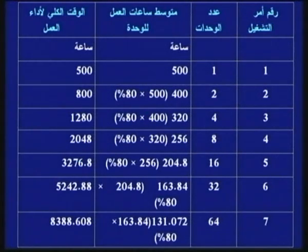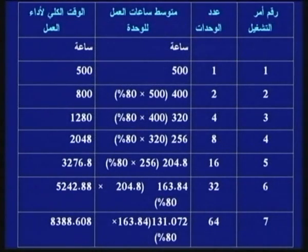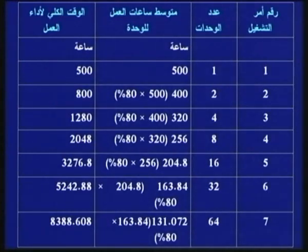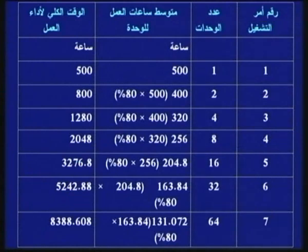أمر التشغيل 3: نضاعف الإنتاج من 2 إلى 4 وحدات، متوسط الوقت = 400 × 80% = 320 ساعة، الوقت الكل = 4 × 320 = 1280 ساعة. أمر التشغيل 4: نضاعف من 4 إلى 8 وحدات، متوسط الوقت = 320 × 80% = 256 ساعة، الوقت الكل = 8 × 256 = 2048 ساعة.